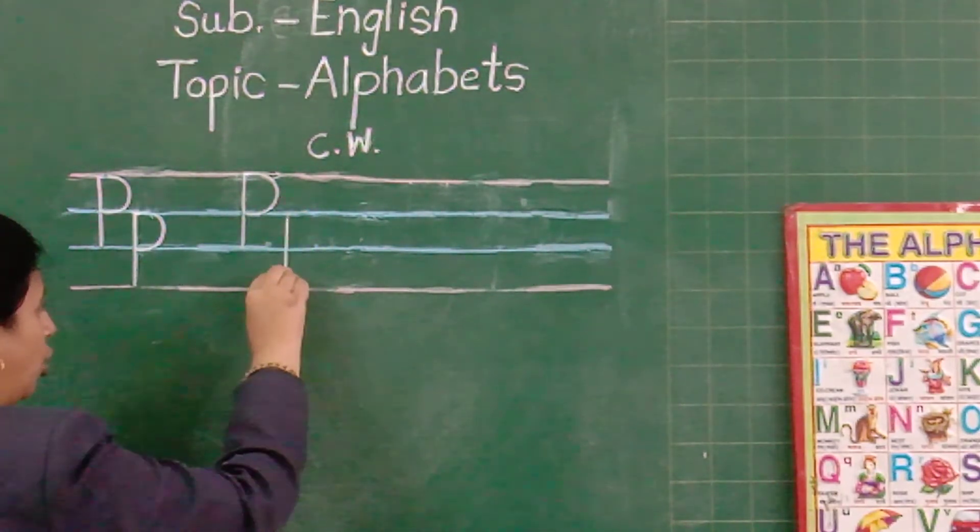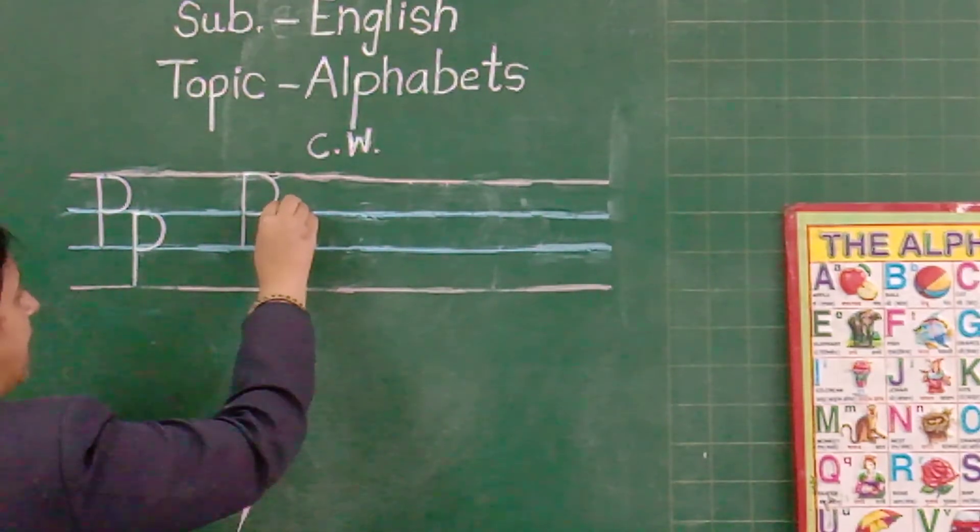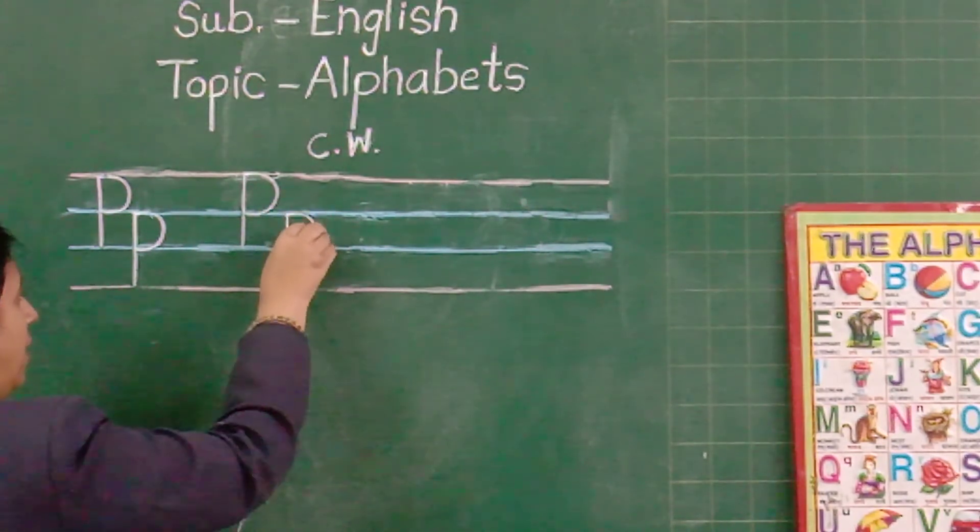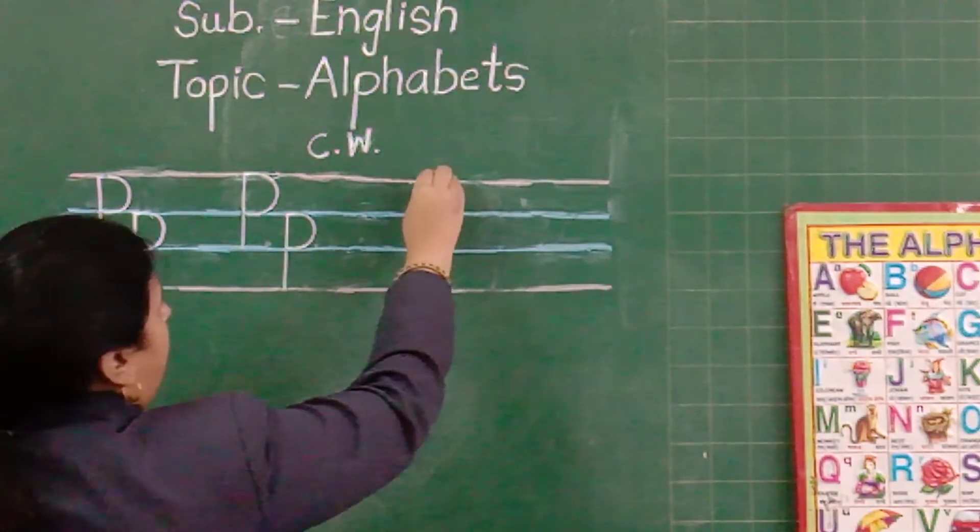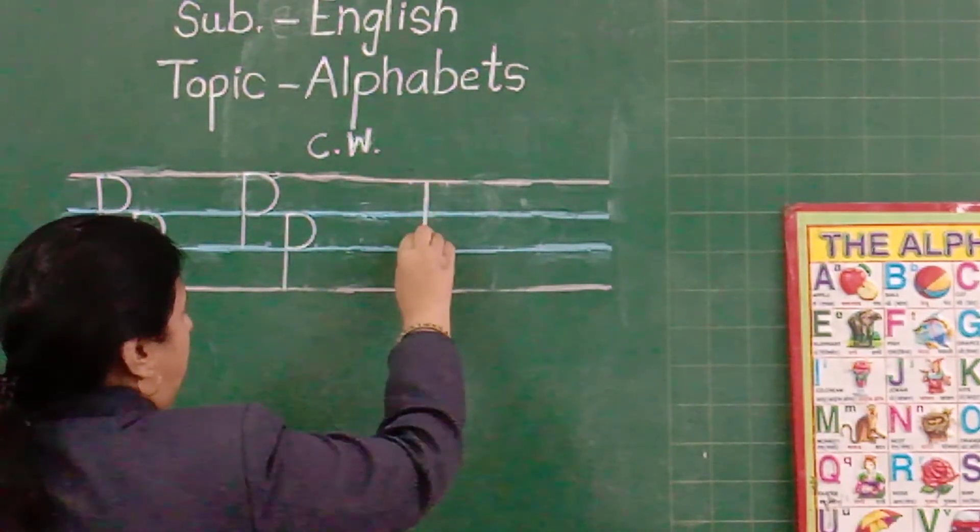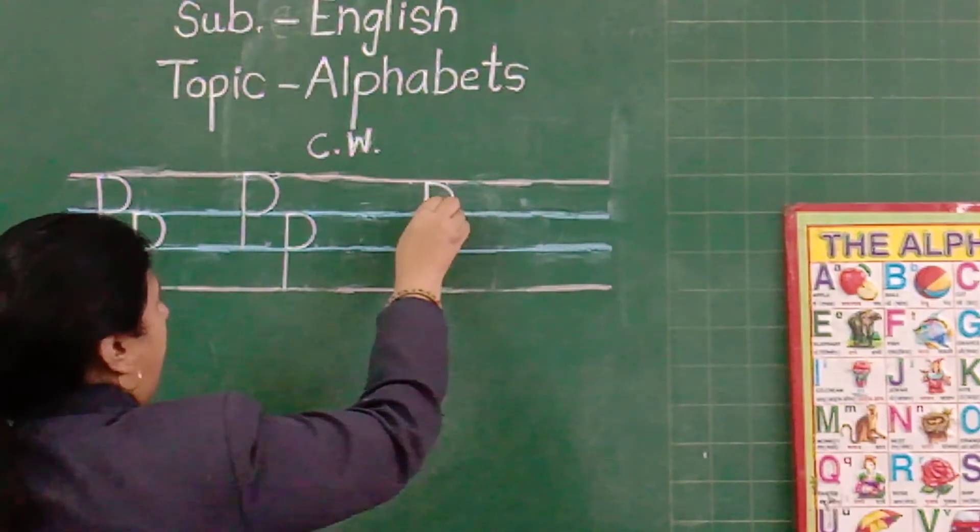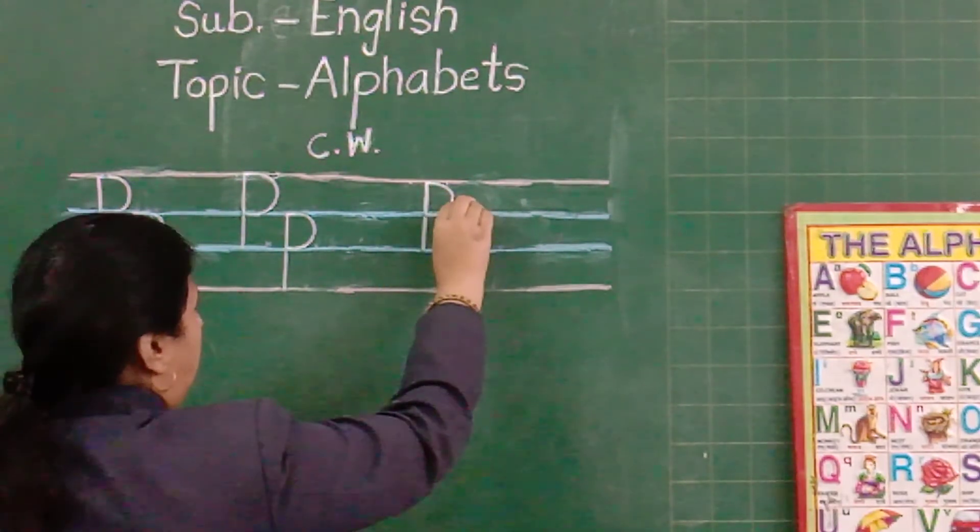And from blue line to red line. Standing line. And curl. Small p. Capital P. And small p.